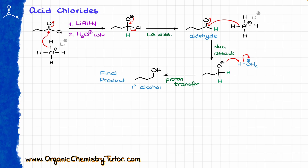When it comes to acid chlorides, these species are incredibly electrophilic, which means that even a mildly nucleophilic reducing agent can also react with those — which means that in this case we can use sodium borohydride. It's not going to work with other carboxylic acid derivatives, but with acid chlorides it does work just fine. So if you wanted to reduce acid chloride to an alcohol, you don't have to use lithium aluminum hydride — sodium borohydride will do.